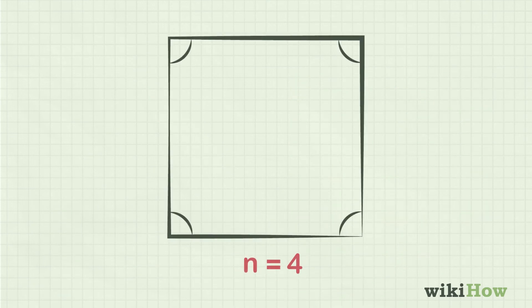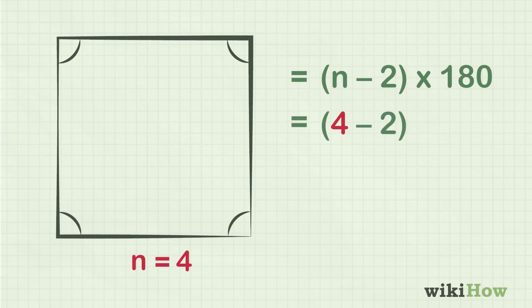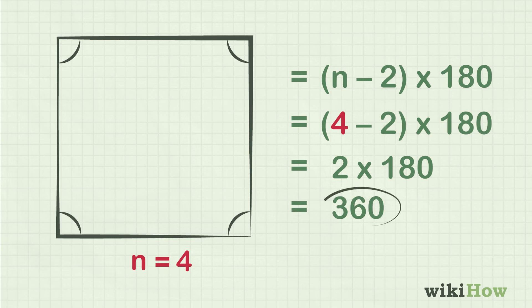On the other hand, a quadrilateral, such as a square or a rectangle, would have 4-2 times 180 degrees, or a total of 360 degrees.